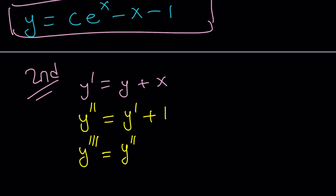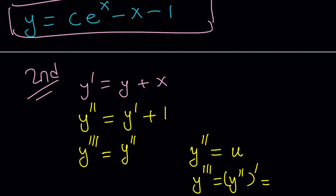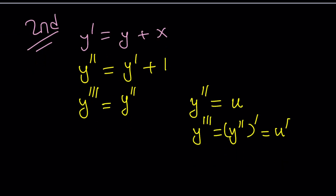What does it mean for a function whose third derivative equals its second derivative? Let me set the second derivative equal to u. Then the third derivative is u prime — it's just the derivative of u. This gives us u prime equals u. We're looking for a function whose derivative equals itself. That's e to the x, so u equals c times e to the x.